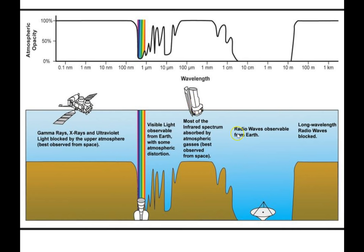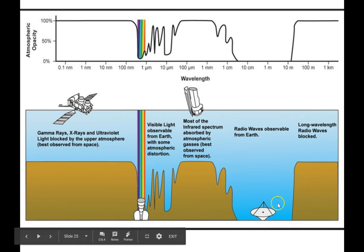Most radio waves are observable from Earth. And as a result, you can have observatories like the one in Arecibo here on the surface of the Earth — these large arrays of satellite dishes pointed up at the sky that observe radio waves coming from deep in space.